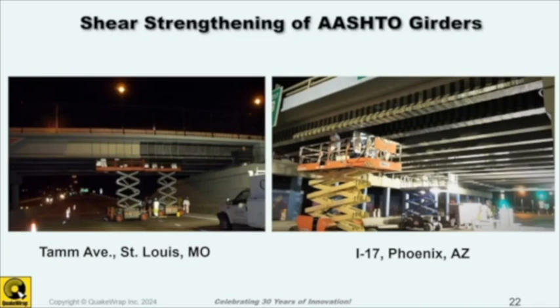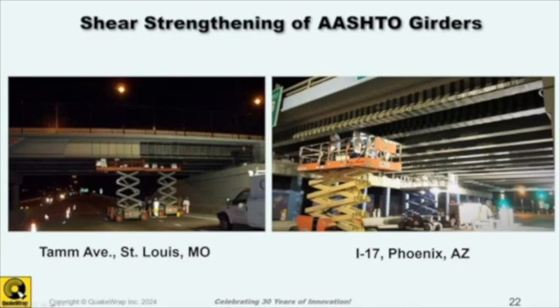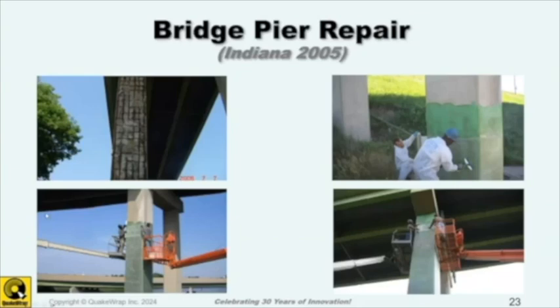One of the nice things about carbon fabric is its flexibility — it can conform to the shape of an AASHTO girder and easily follow that contour. One thing to be aware of: you don't want to bend it over a very sharp corner, so we require sharp corners to be rounded to about a one-inch diameter to avoid breaking the fibers. A lot of these repairs can be done with minimal lane closures — one night close a couple of lanes, work on one side of the bridge, and the next night work on the other side. Relatively little disruption of service.